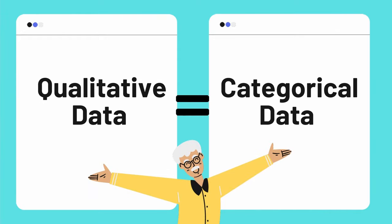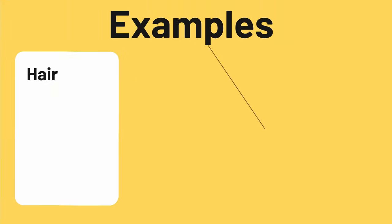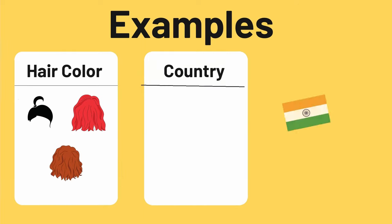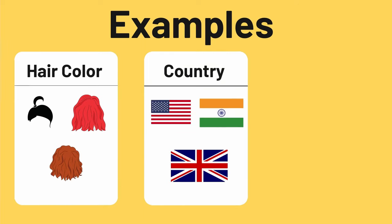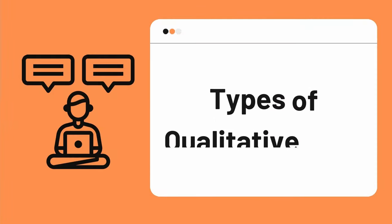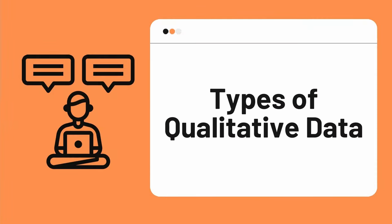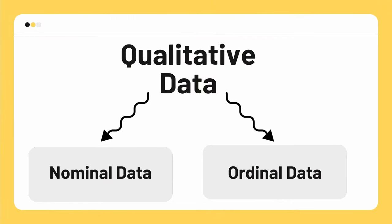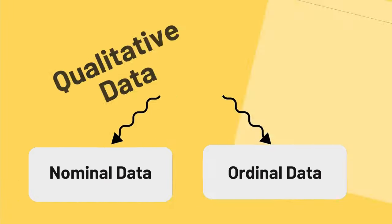Qualitative data is also known as categorical data. Examples include hair color, which could be red, yellow, or black; the country you were born in; or the size of clothes you wear. Qualitative data can be further divided into two types: nominal data and ordinal data.